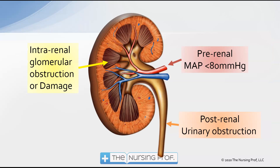Renal failure can be one of three different varieties, whether acute or chronic. In most cases, chronic renal failure is the result of untreated or poorly treated acute renal failure. Intrarenal or glomerular dysfunction means we have damage occurring directly to the nephron itself — deep inside the kidney into that functional unit of the nephron.